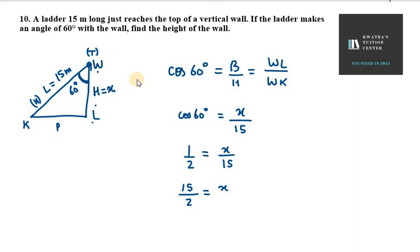So 15 over 2 equals 7.5, which is 7.5 meters. This is the length of the wall or height of the wall. So this is your answer for question number 10.